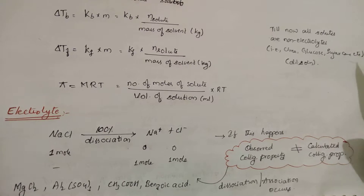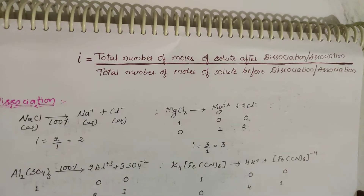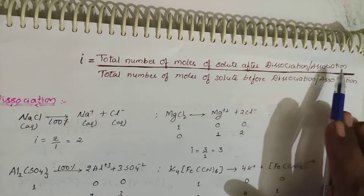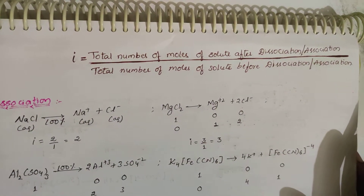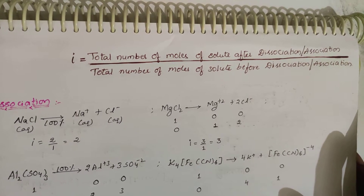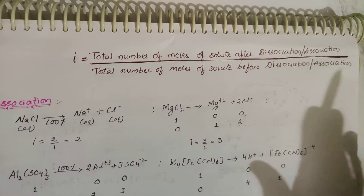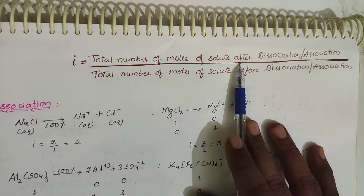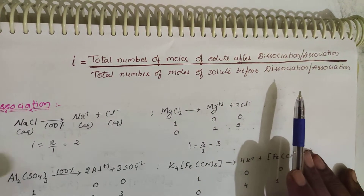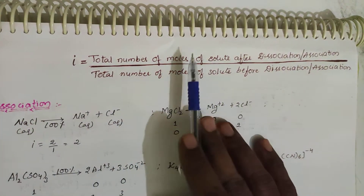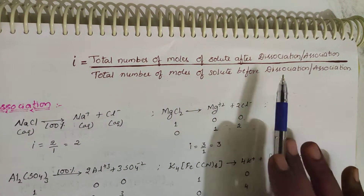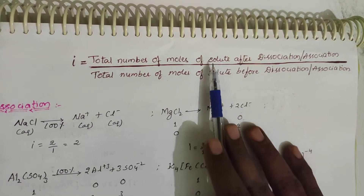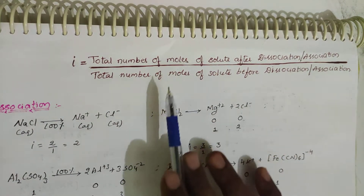This is where the Van't Hoff factor 'i' comes in. It is defined as: total number of moles of solute after dissociation or association divided by number of moles of solute before dissociation or association. Simply: i = moles after / moles before.